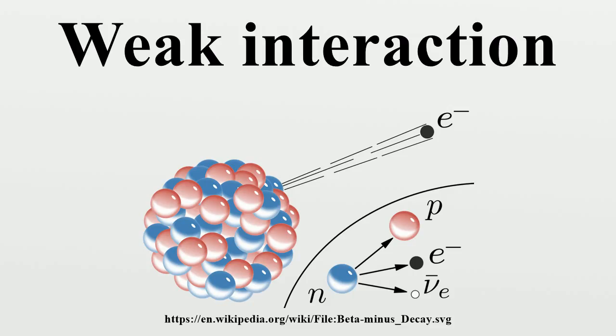In 1933, Enrico Fermi proposed the first theory of the weak interaction, known as Fermi's interaction. He suggested that beta decay could be explained by a four-Fermion interaction, involving a contact force with no range.